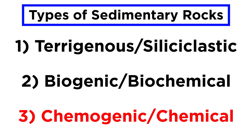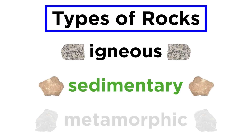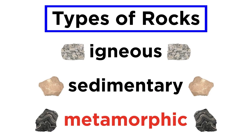With chemogenic rocks covered, we have completed our assessment of the classification of sedimentary rocks and our analysis of sedimentary rocks in general. Let's move on to our third and final type of rock: metamorphic rock.